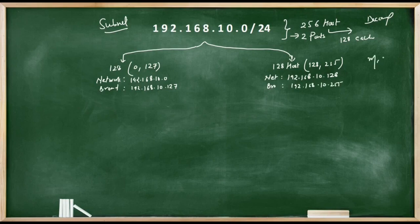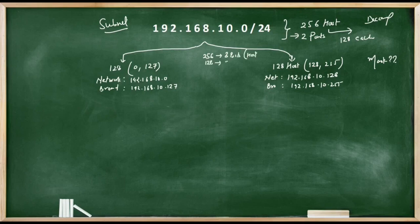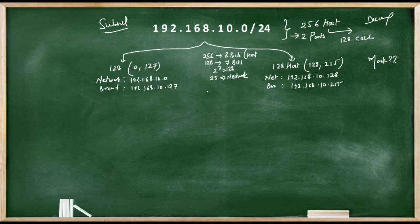What should be the subnet mask of these subnetworks? When we had 256 host addresses, we used 8 bits for the host part. Now with 128 hosts, we need 7 bits because two to the power 7 is 128. This means 7 bits for host and, since an IP address is 32 bits long, the remaining 25 bits are for the network part. The subnet mask for both these subnetworks is /25.